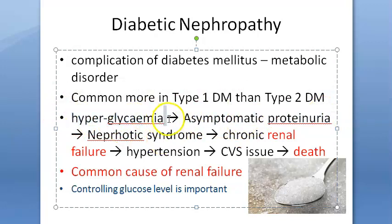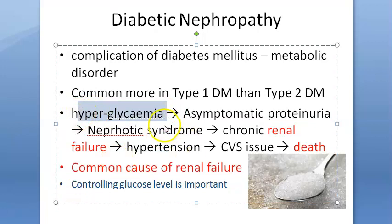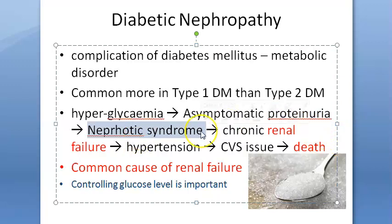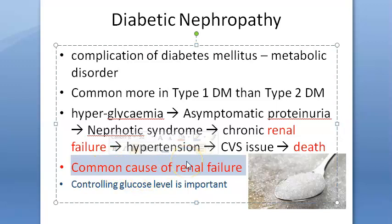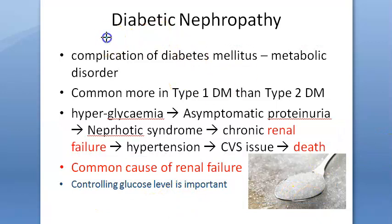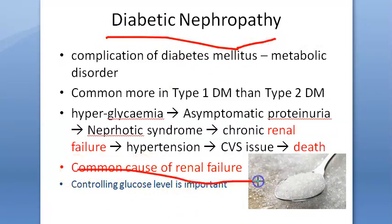Due to hyperglycemia there are endothelial and vascular changes, hyperperfusion to the kidney, and protein in the urine (proteinuria). Initially this is asymptomatic, then progresses to nephrotic syndrome with heavy proteinuria, then renal failure, hypertension, cardiac issues, and potentially death. Diabetic nephropathy is the most common cause of renal failure, so controlling blood sugar is very important.